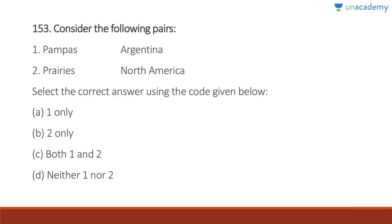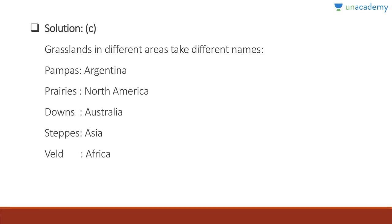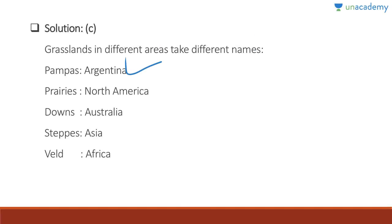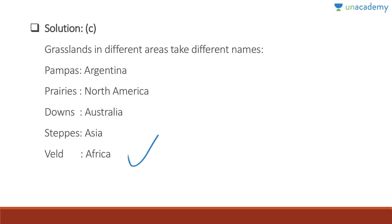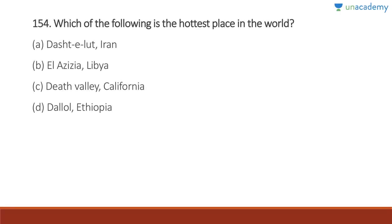Question 153: Pampas is in Argentina — correct. Prairies are in North America — also correct. Answer is C, both one and two. Grasslands in different areas take different names: Pampas in Argentina, Prairies in North America, Downs in Australia, Steppe in Asia, Veld in Africa.